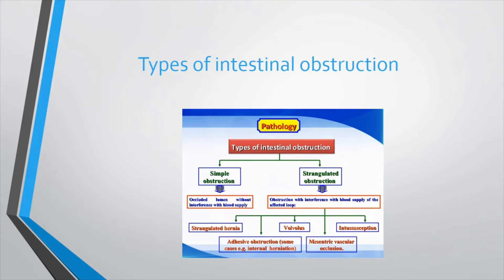The main categories are simple and strangulated obstruction. Simple obstruction is an occluded lumen without interference with blood supply. Strangulated obstruction is an obstruction with interference with the blood supply of the affected intestinal loop — for example, strangulated hernia, volvulus, and intussusception.